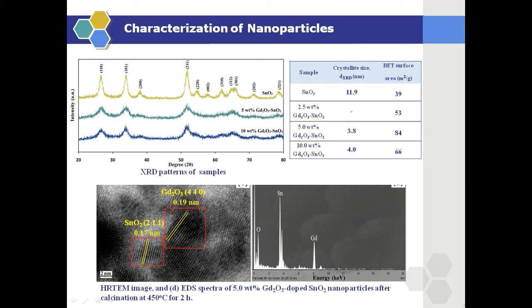Here you can see the XRD and TEM results of pure and gadolinium oxide doped tin oxide nanoparticles. By addition of gadolinium oxide to tin oxide, the main XRD peaks broadened. In addition, the average crystallite sizes of nanoparticles decrease. This indicates that the presence of Gd ions in tin oxide inhibited the growth of its crystallites.